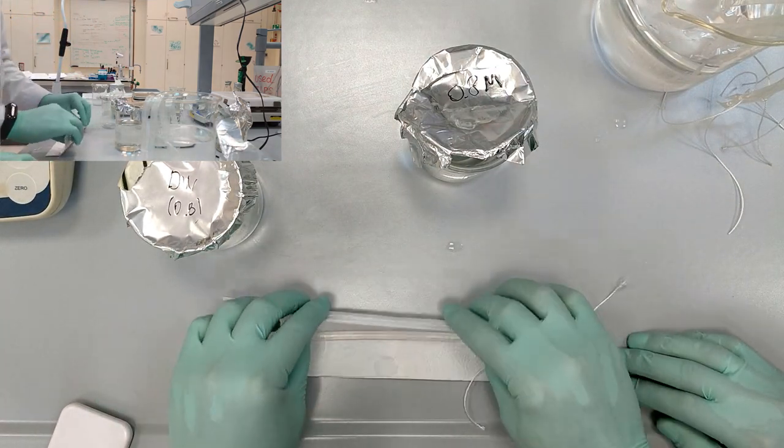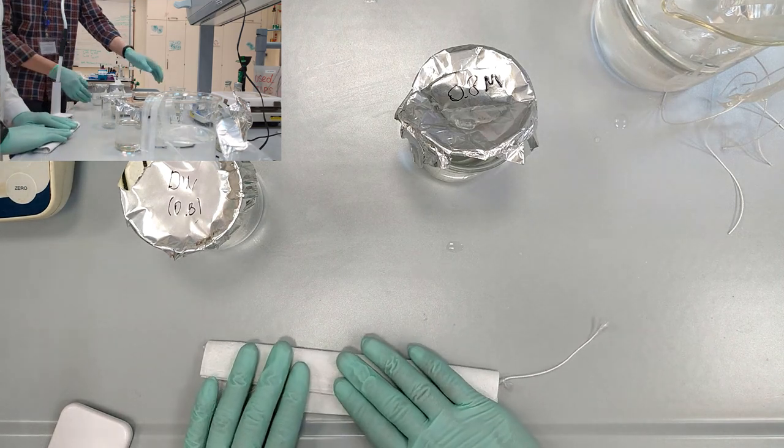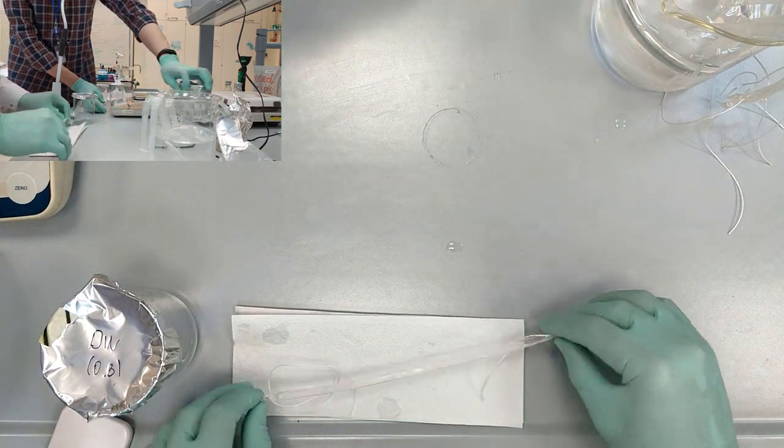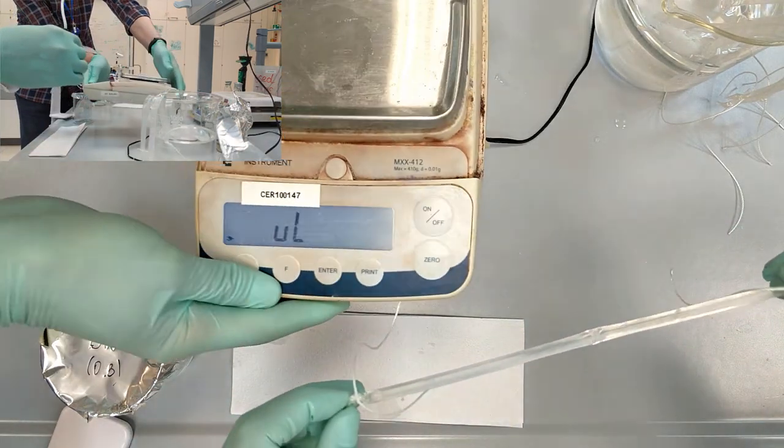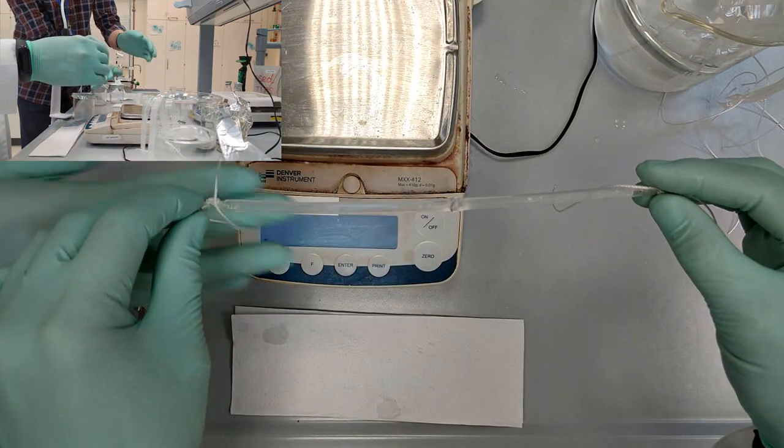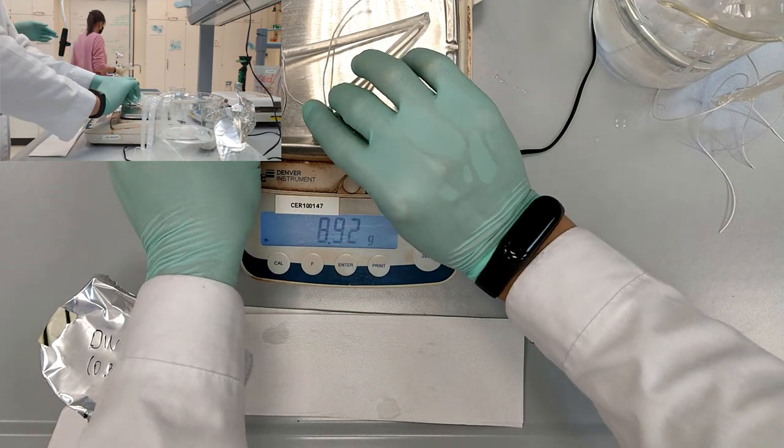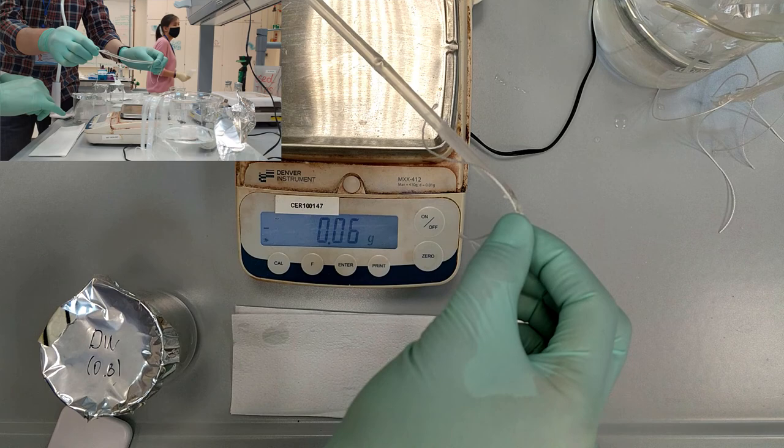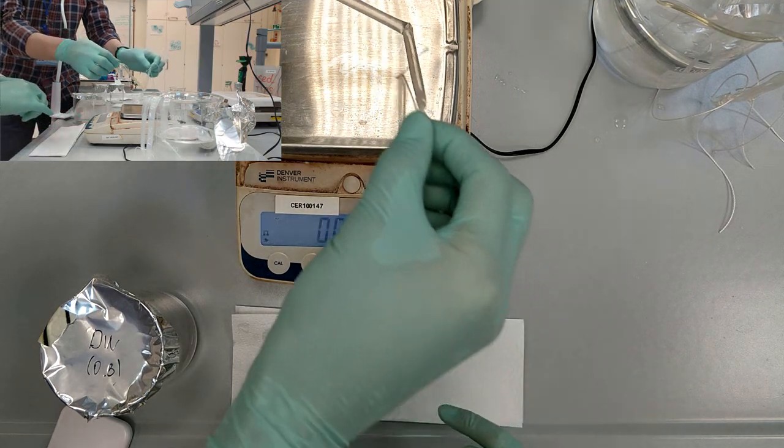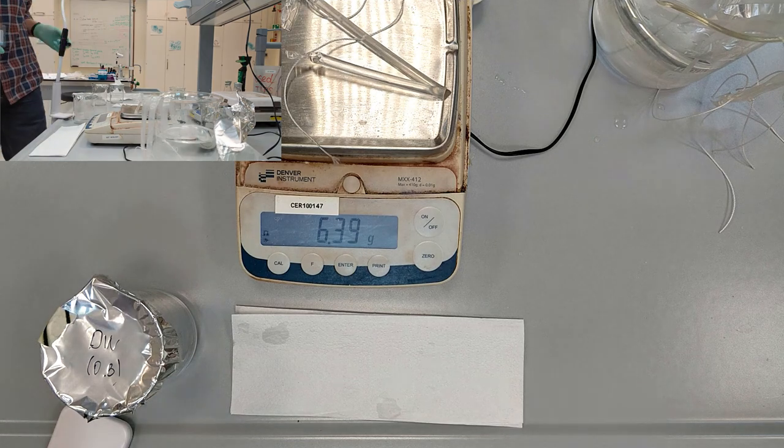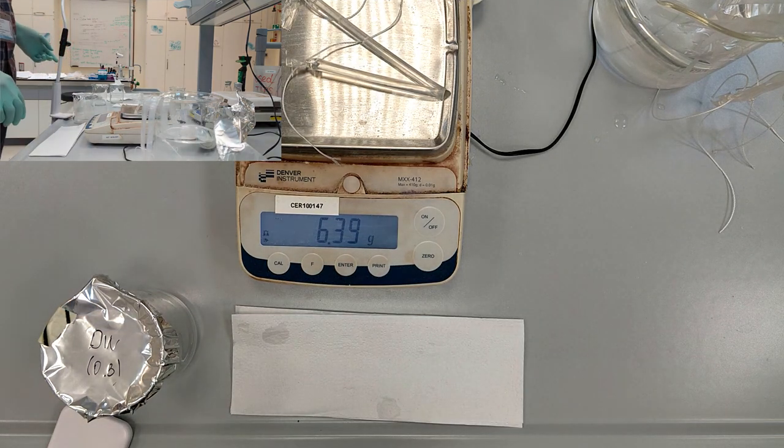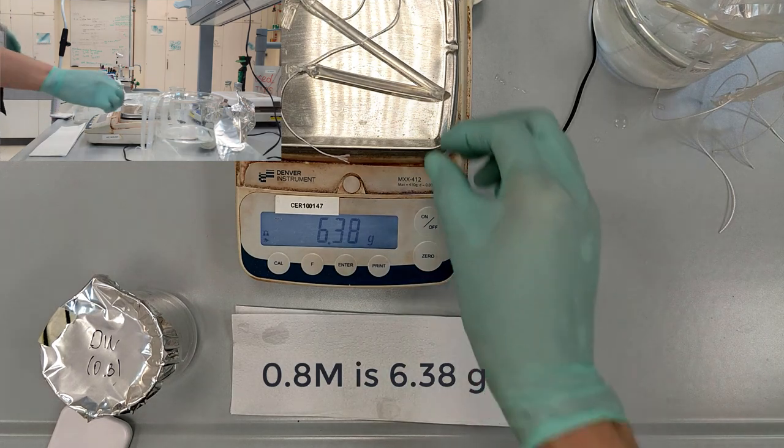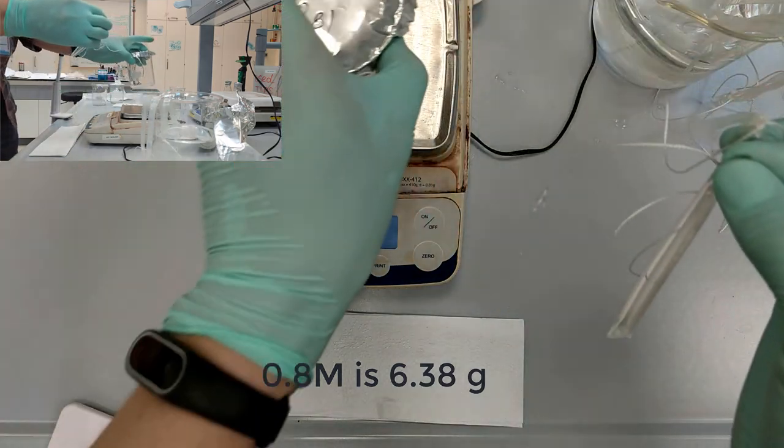Dry the dialysis tube and using scales determine the mass. In this case you will need to zero the level. Wait until it shows zero. Okay, so for 0.8 concentration you have 6.38 grams of the dialysis tube.